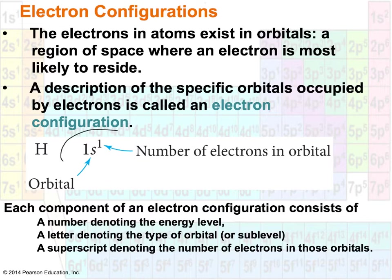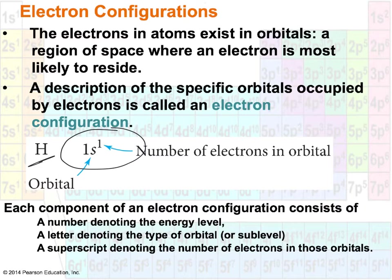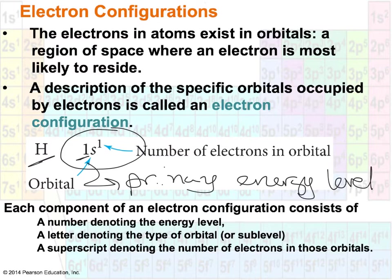The general notation we use for electron configuration is shown here — this happens to be the electron configuration for hydrogen. The first thing you want to do when writing an electron configuration is find out how many electrons the element has. In any neutral atom, which is what we're dealing with unless told otherwise, the number of electrons equals the number of protons. Hydrogen has one electron. Every orbital is represented first by a number, which tells you the primary energy level that electron resides in.